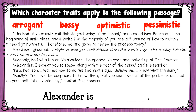Let's read another passage. 'I looked at your math exit tickets yesterday after school,' announced Mrs. Pearson at the beginning of math class, 'and it looks like the majority of you are still unsure of how to multiply three-digit numbers. Therefore, we are going to review the process today.' Alexander groaned. 'I might as well get comfortable and take a little nap. This is easy for me. I don't need a day to review.' Suddenly, he felt a tap on his shoulder. He opened his eyes and looked up at Mrs. Pearson. 'Alexander, I expect you to follow along with the rest of the class,' said the teacher. 'Mrs. Pearson, I learned how to do this two years ago. Believe me, I know what I'm doing.' 'Really? You might be surprised to know, then, that you didn't get all of the problems correct on your exit ticket yesterday,' replied Mrs. Pearson. Alexander is arrogant.